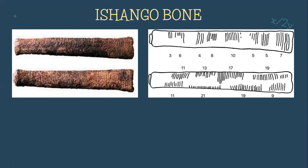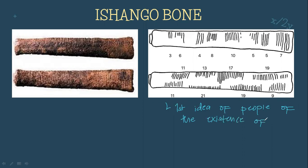One of the most famous bones showing that the concept of numbers was already present is the Ishango bone from Lake Edward in Africa. As you can see, it has three columns. Archaeologists believe these bones are related to the lunar month because the numbers — 11, 29, 9, and also 11, 13, 17, 19 — when added together, give us 60, which is the number of days in the lunar month.